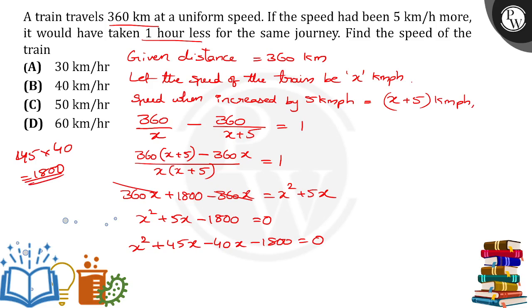So, I am using x into x plus 45 minus 40 into x minus 45. Taking common factors, we get x minus 40 into x plus 45 equal to 0.